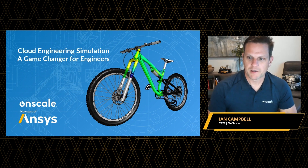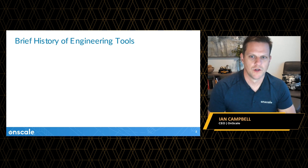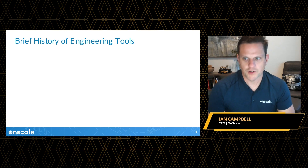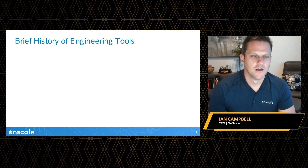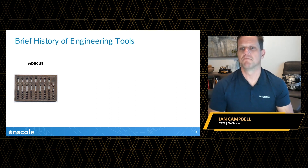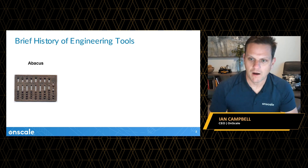But before we talk about the future of engineering, I want to go back in time for a minute and talk about the history of engineering tools. We engineers are only as good as our tools, and as our tools evolve, so does our capacity to engineer. 2,000 years ago, Roman engineers used abacuses to design aqueducts, roads, beautiful palaces, and pretty much all of Roman Europe.